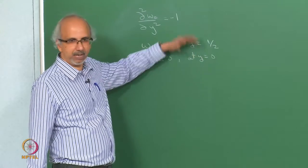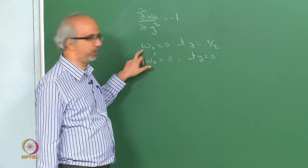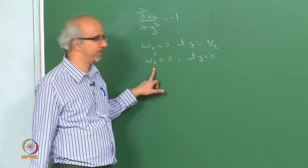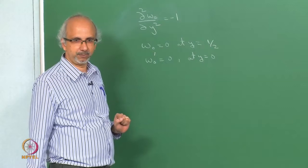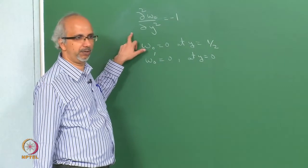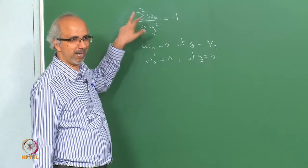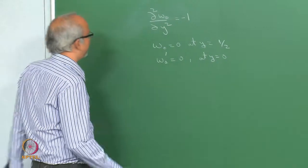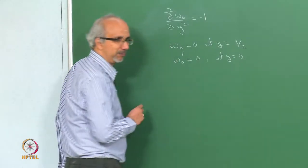We are looking at the upper half. At y equal to 0, you have the no-slip boundary condition, and at y equal to 0 you have the symmetry condition. That is the differential equation which has to be satisfied, and this is actually a total derivative, not a partial derivative. Therefore, you can integrate it out directly.